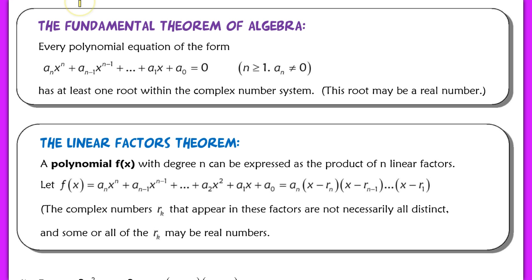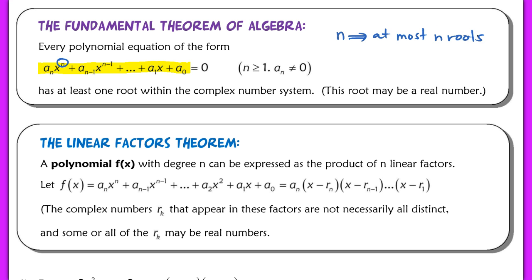The fundamental theorem of algebra states that for every polynomial equation of this form, you're going to have at least one root within the complex number system. This root does not have to be a real number — it can be — but it's going to be within the complex number system. What is also implied here is that the number of roots will at most be the degree of the polynomial. If n is the degree, it's going to have at most n roots. So if we had something like x to the fifth, this will have at most five roots.